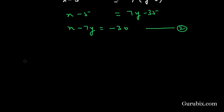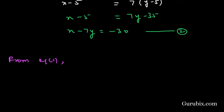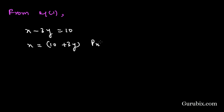Now we shall use the substitution method to solve this pair of equations. Starting from Equation 1: X minus three Y equals ten. We find the value of X in terms of Y, giving X equals ten plus three Y. We shall substitute this value into Equation 2.